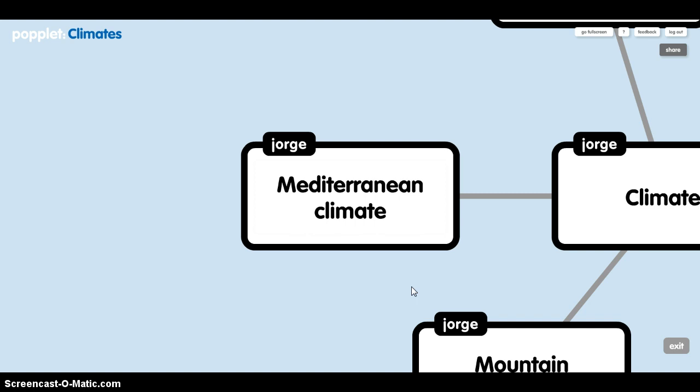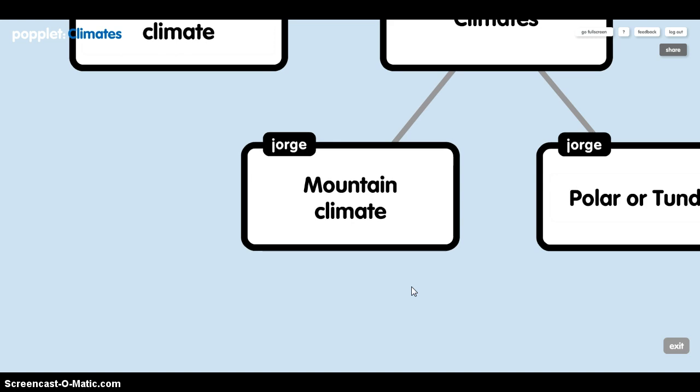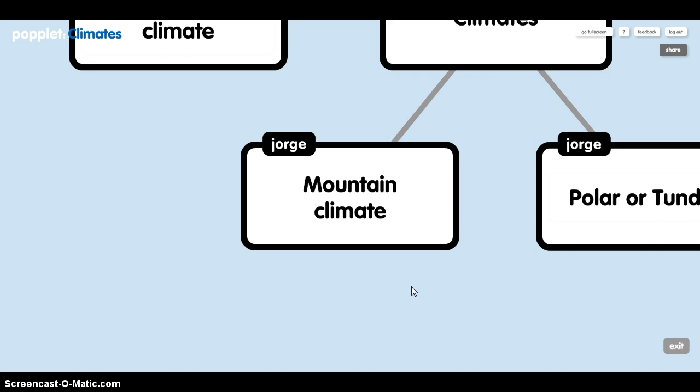Mountain climate. This climate is characteristic of the high mountain ranges. Winters are very cold and summers are mild. It snows a lot. Typical vegetation includes forests and steppes.